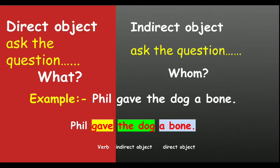Why is 'the dog' an indirect object? Because it answers the question 'whom'. Why is 'a bone' a direct object? Because it answers the question 'what'. When the answer comes from asking 'what', it is a direct object. When the answer comes from asking 'whom', it is an indirect object.